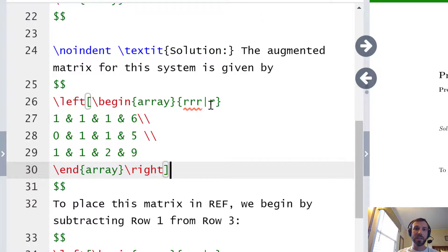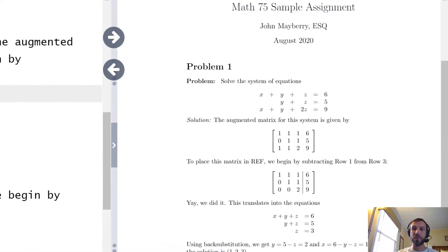Second notice that I've placed a vertical line in between the third and the fourth columns. This is to create the corresponding vertical line in our augmented matrix. If I took this out then I would simply get a standard 3x4 matrix which of course will also be useful in writing up solutions to problems in the future. For now I'm going to put it back in though.